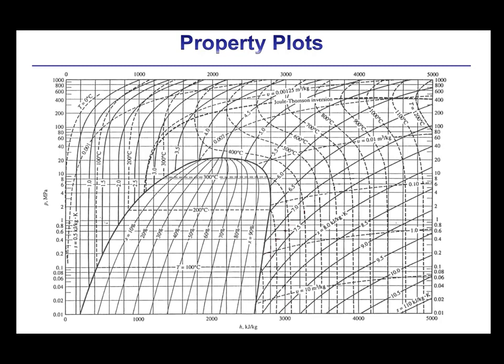Property plots are commonly used in thermodynamic cycle models. Years ago, property plots were used to estimate properties themselves graphically. However, even though property information can now be obtained by more precise means, like these functions in EES, property plots are still pretty useful in order to visualize thermodynamic cycles and processes. Cycle states and process trajectories can be understood a lot more easily if you overlay them onto plots that have property coordinates.